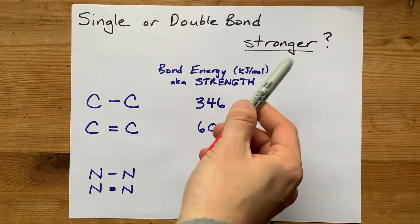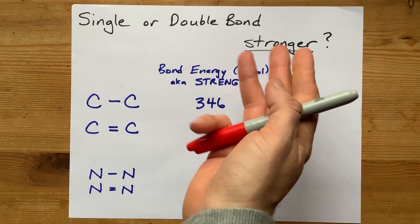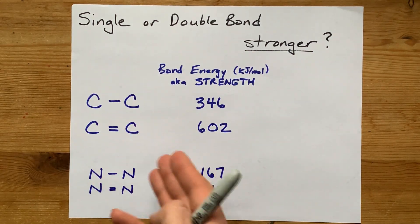Is a single or a double bond between two atoms stronger? The answer is a double bond is always stronger than the single bond.